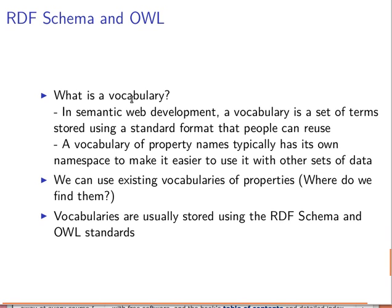You must have heard me mention the word 'vocabulary' before. In the semantic web, a vocabulary is a set of terms stored using a standard format that people can reuse. Basically, a vocabulary is just a set of terms that is stored and saved somewhere so people can use it again and again. Usually these are property names put together with their own namespace, made available in a file, usually in RDF format.